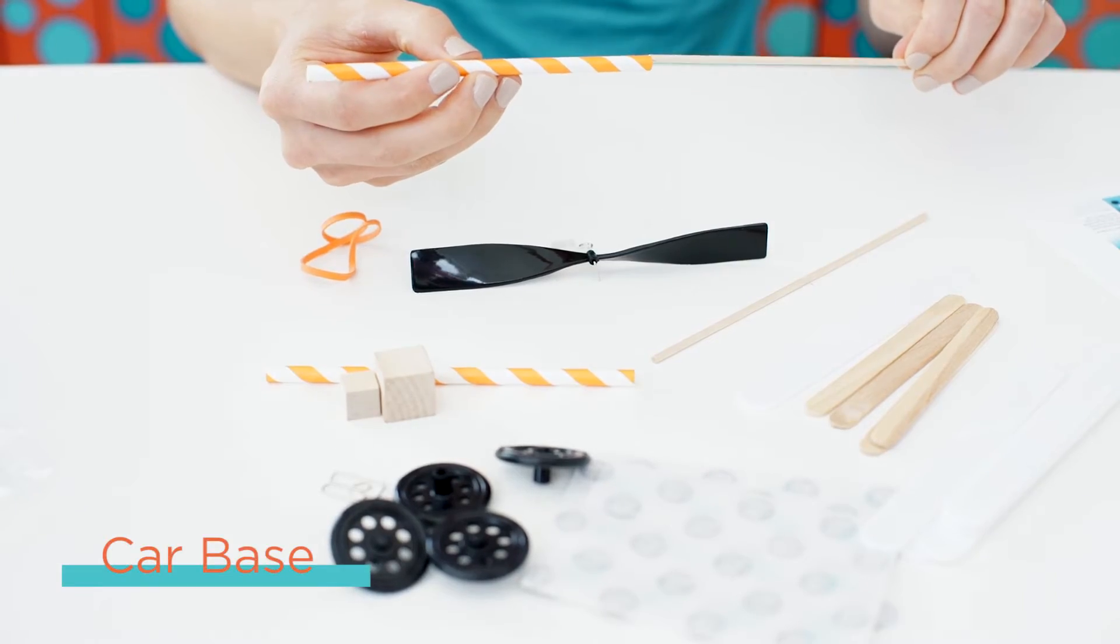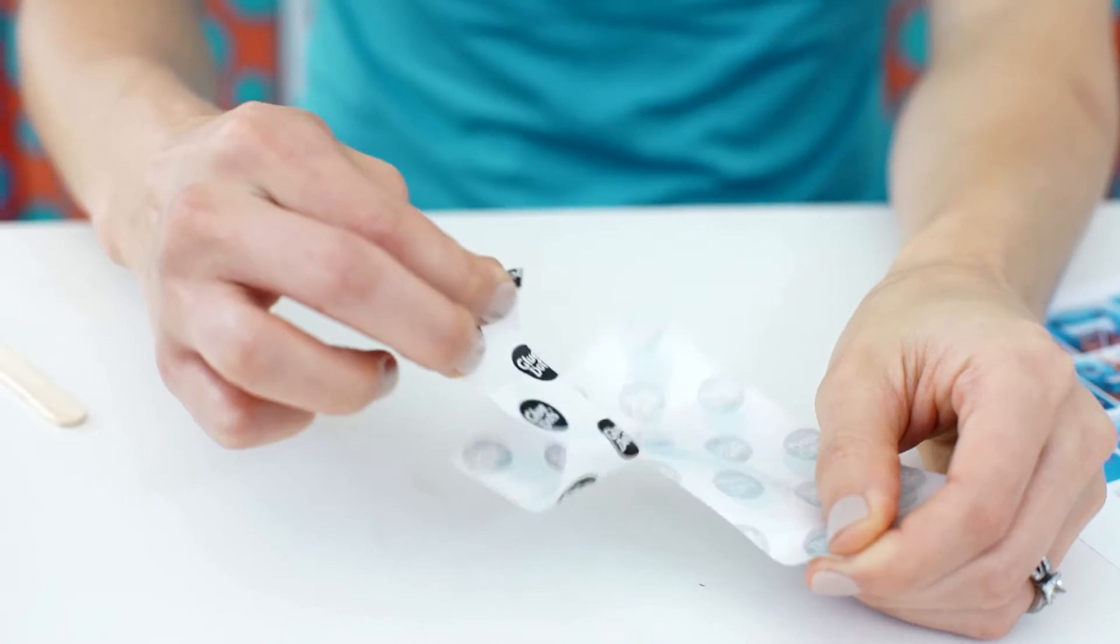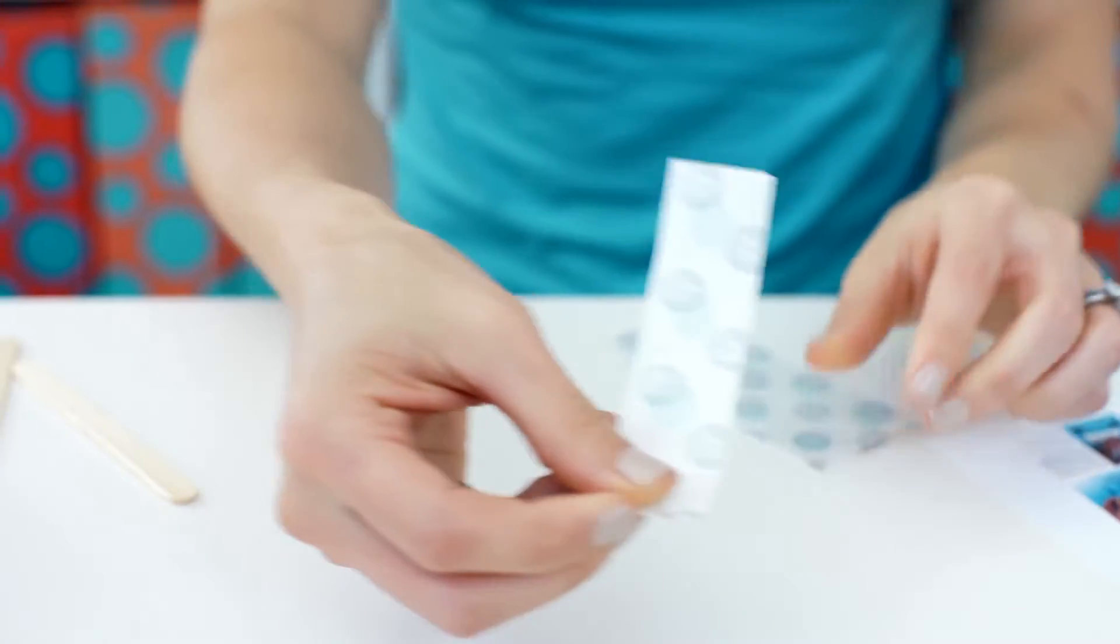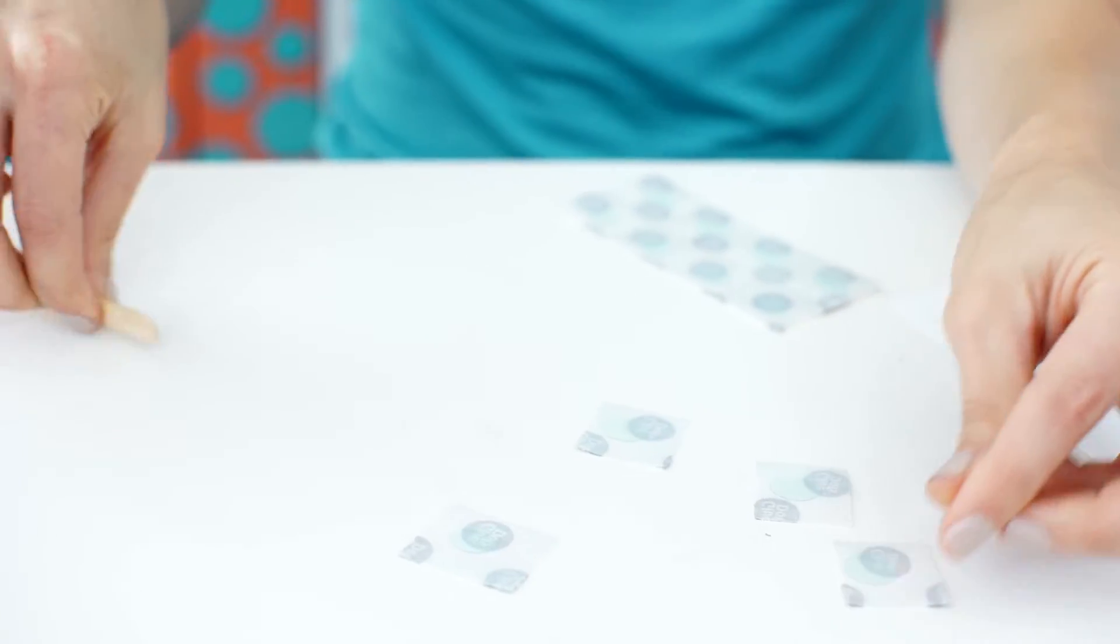Take your wood dowel and put it into your straw and put the wheels on both ends. I like to tear the glue dots into strips and then use them one by one so they don't get stuck to each other.